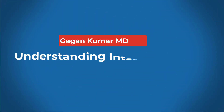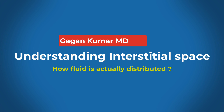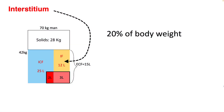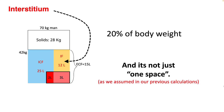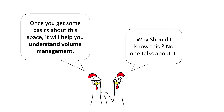Hello everyone. Today we will be discussing interstitial space and how they affect fluid distribution. In the previous lectures, we considered interstitium as a large space constituting about 20% of body weight which accumulates fluids. That was a simple model to understand some basics of fluid movements, but we need to take it further to explain more complex phenomena. Knowing about interstitium will help you understand and manage IV fluid and diuresis.